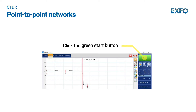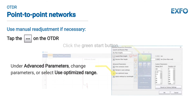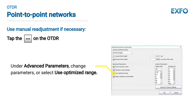This is usually a good compromise to return a global view of the link. Then if needed, you can manually readjust the pulse width and averaging time if you need a bit more resolution to find something specific on the link.